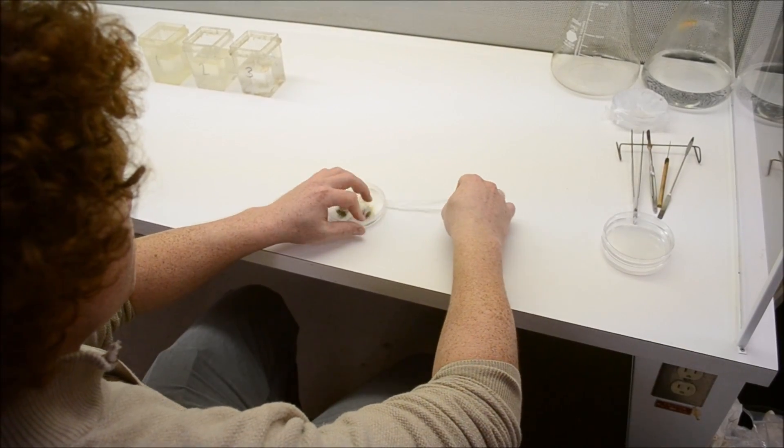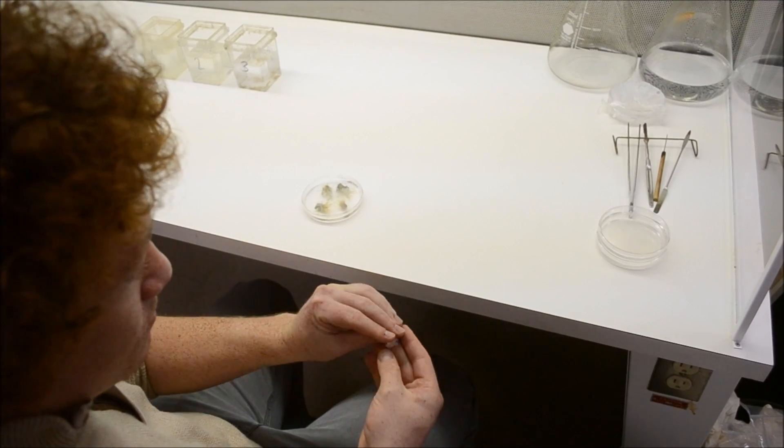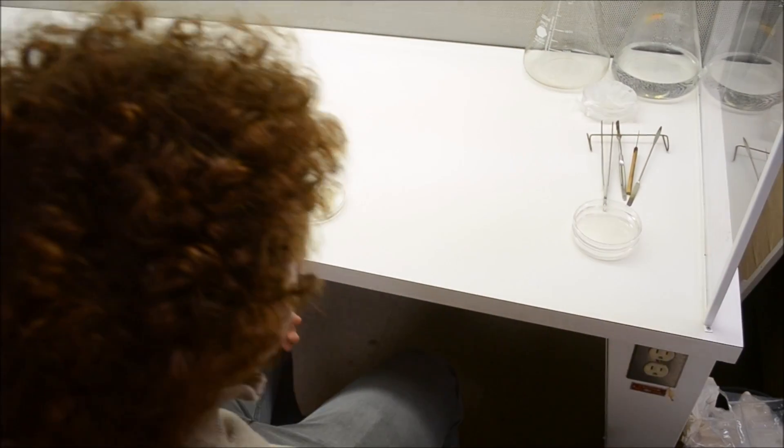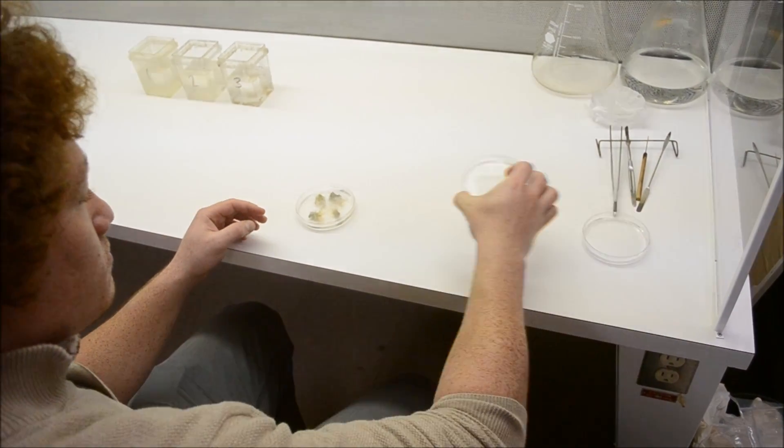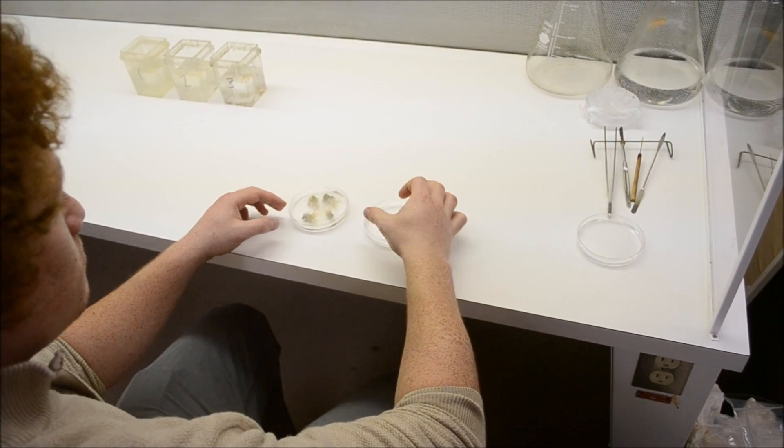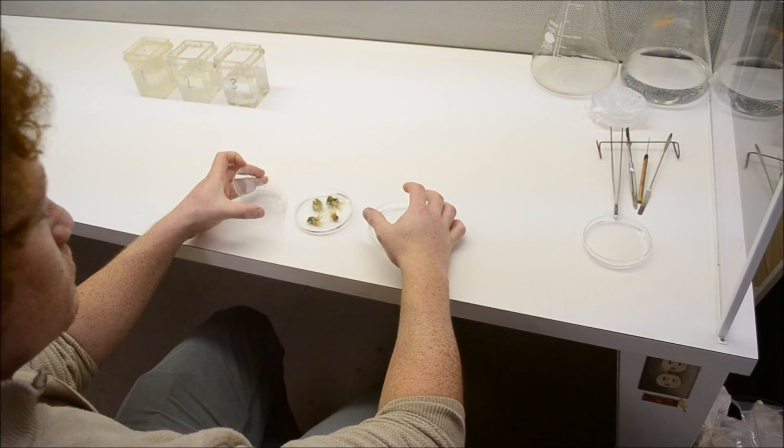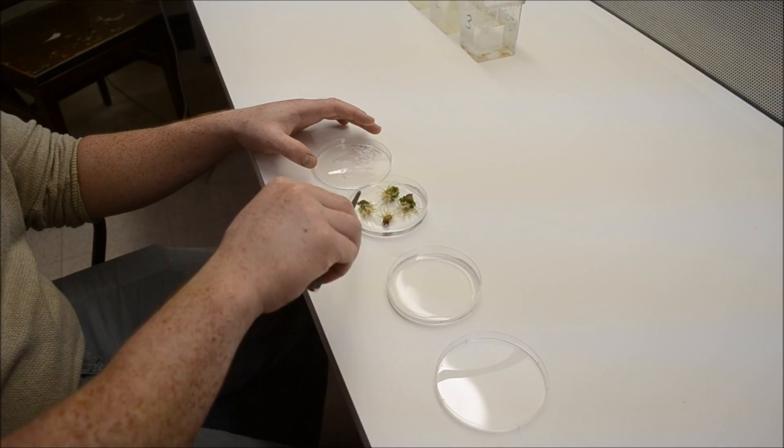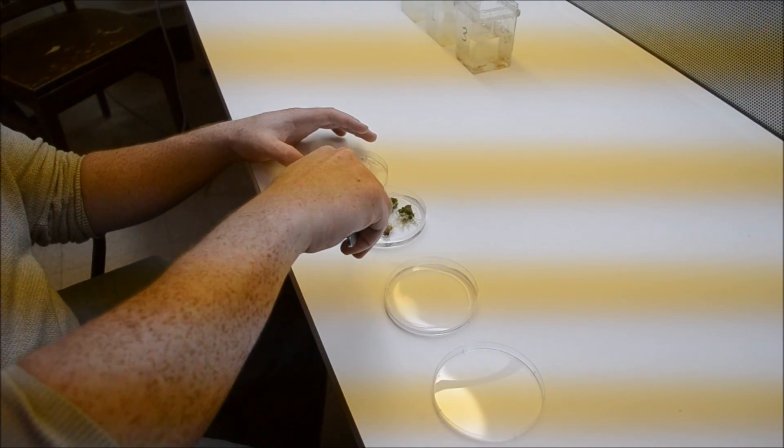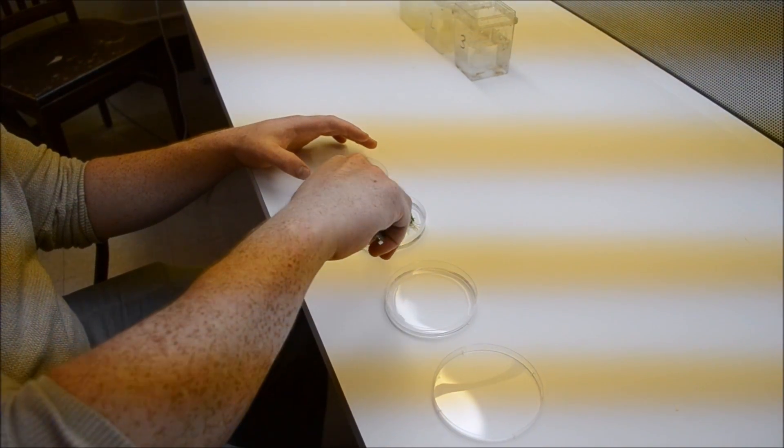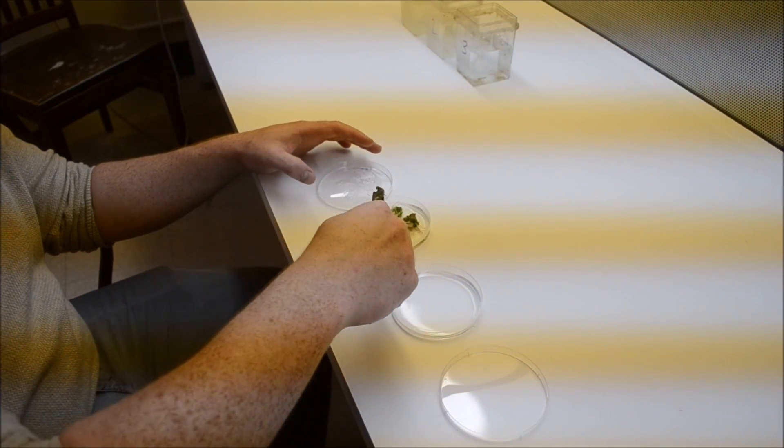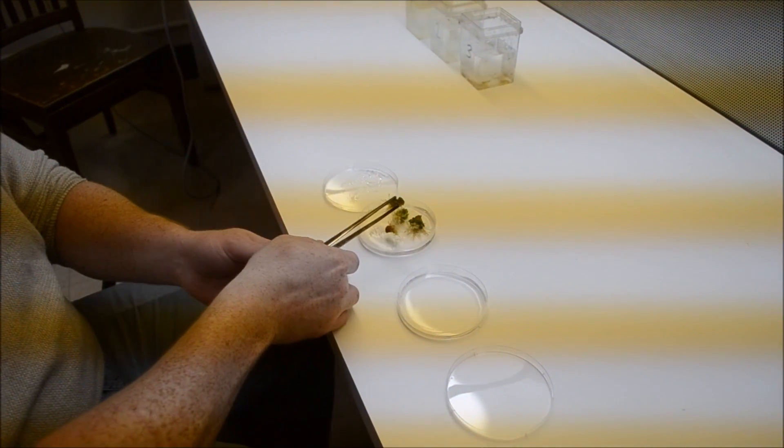If parts of your tissue culture have become infested, do not fear. The unharmed explants can easily be transplanted into another petri dish and placed back into the incubator. Take the same precautions when transplanting the unharmed explants. Again, remember that cleanliness is of the utmost importance.